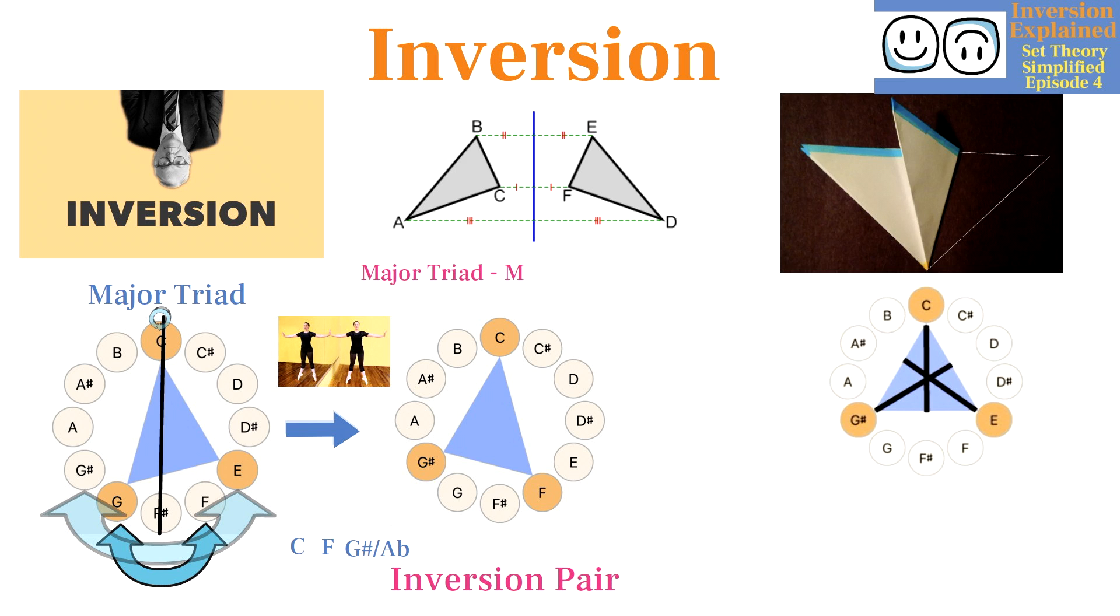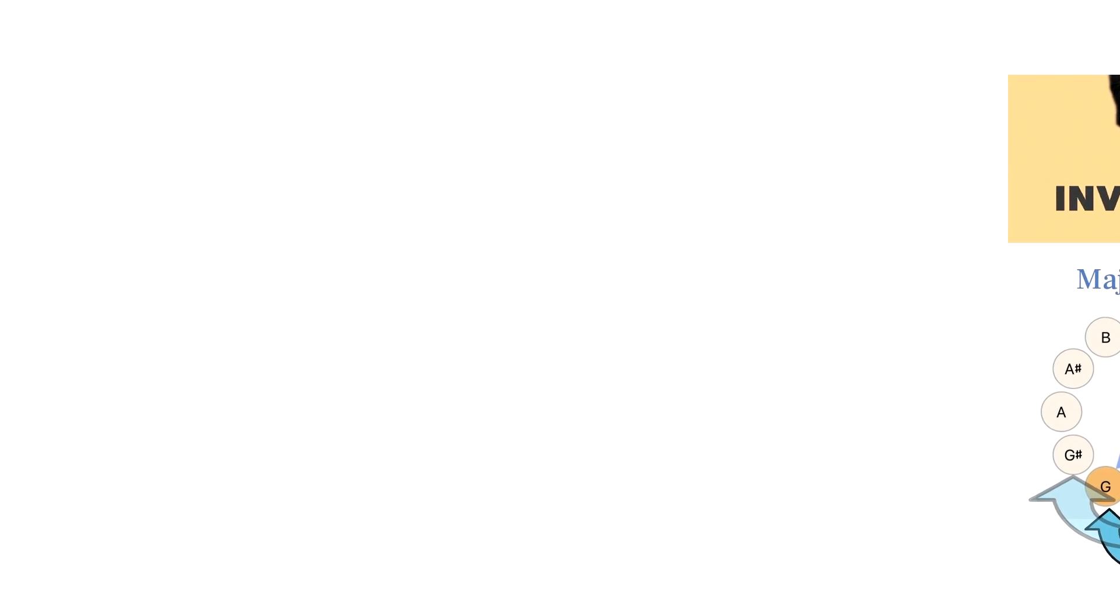This shows us that major and minor triads are inversion pairs that have the same essential shape, they're just flipped versions of each other.